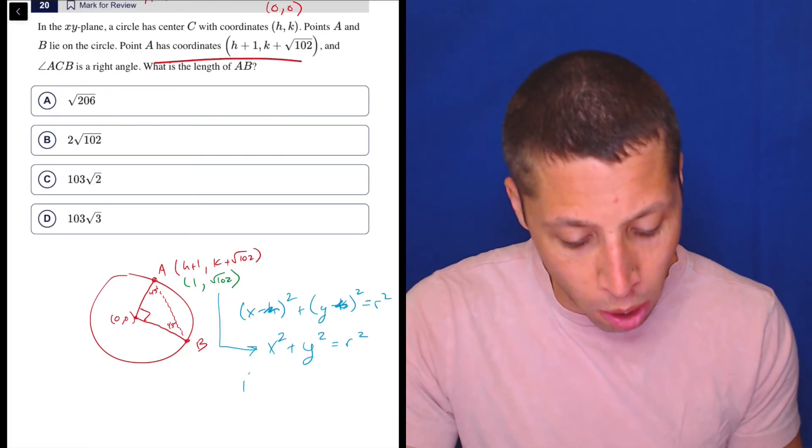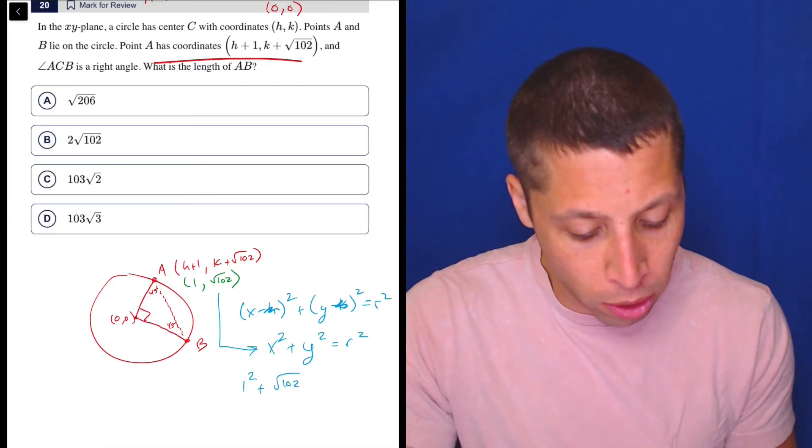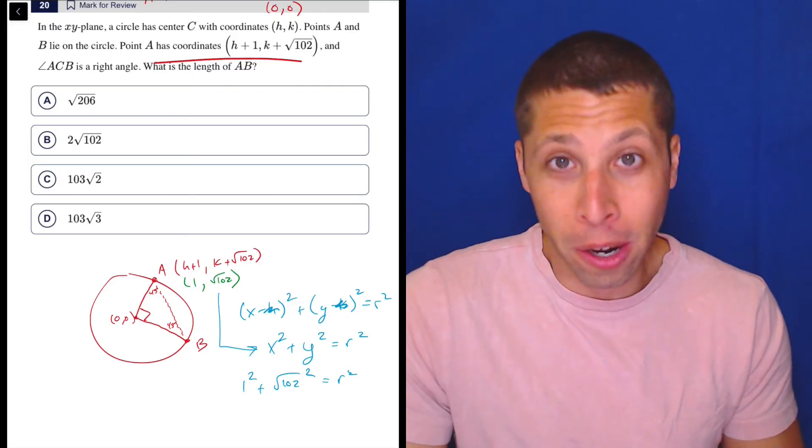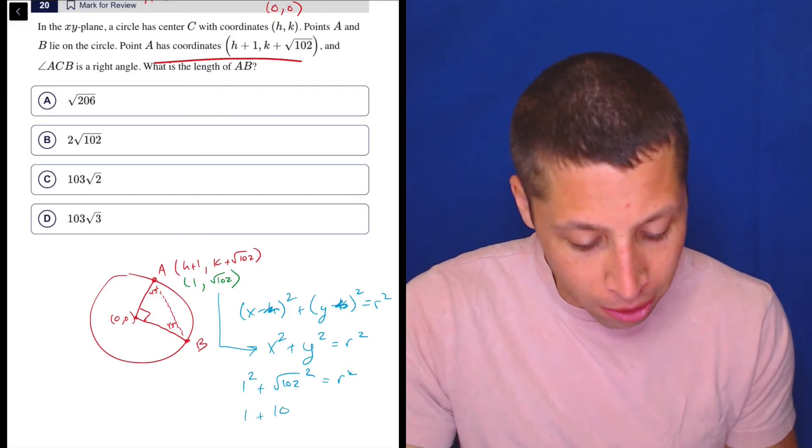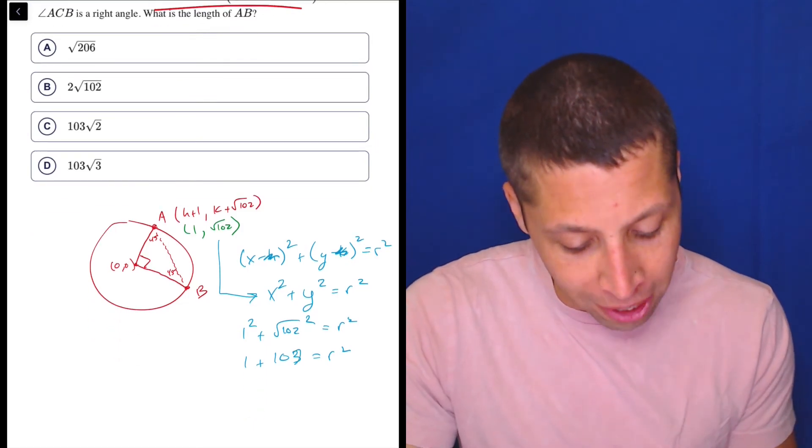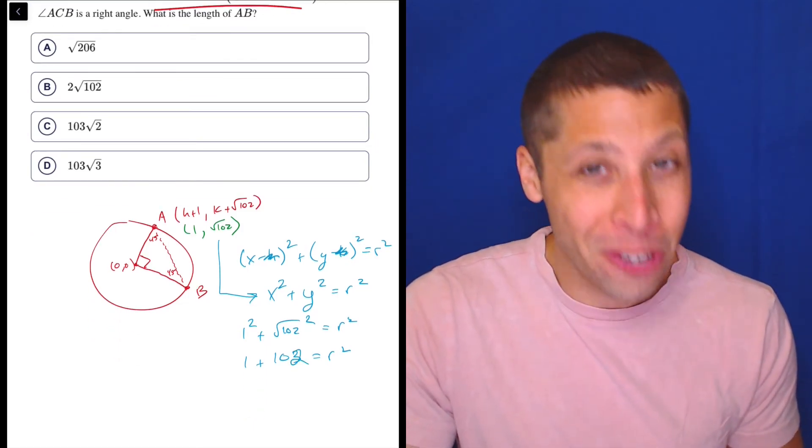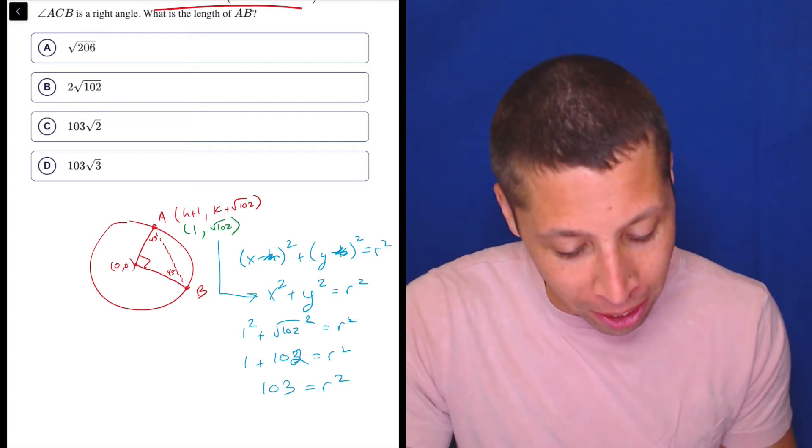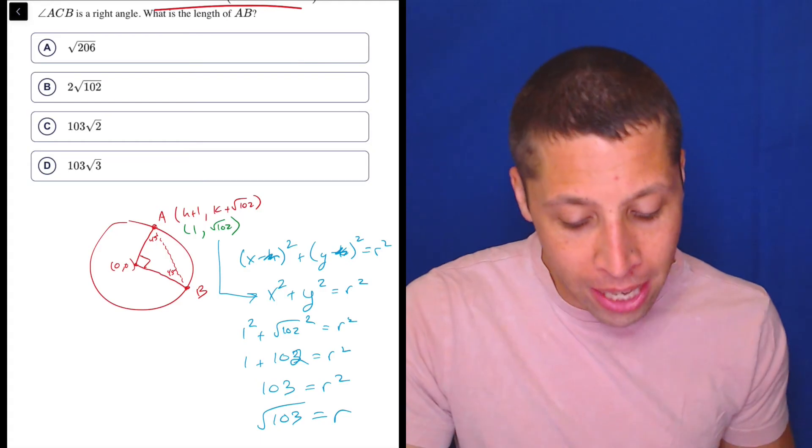I'm going to be able to solve for this radius now because I have an X and a Y that I can plug in. So 1 squared plus radical 102 squared is equal to R squared. Well, I know it's scary with a radical, but the squared makes it go away. So 1 plus 103 is R squared. Or sorry, I'm getting ahead of myself. 1 plus 102 is R squared. So 103 is R squared, meaning the square root of 103 is the radius.